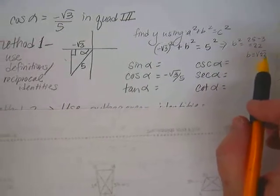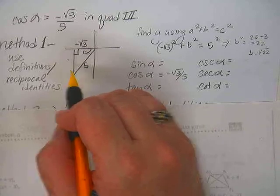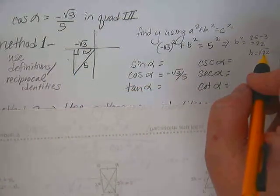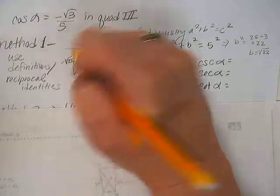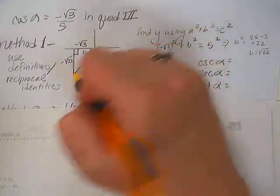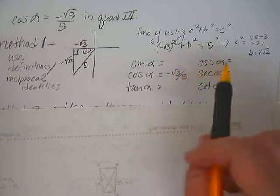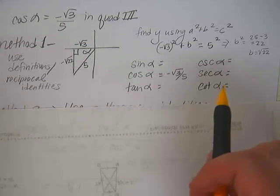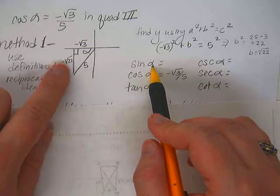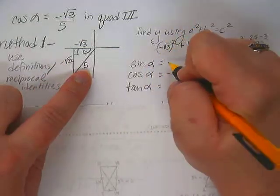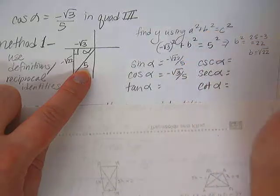Now be careful, even though that's the number we got from Pythagorean theorem, look at your graph and the quadrant it's in. Is it positive square root of 22 or negative square root of 22? That's a negative square root of 22 because it's going downward in that quadrant 3. So now we should be able to simply go in and fill in the other 5 ratios that they want us to find just using the definitions of those ratios. So sine is opposite over hypotenuse, so that would be negative square root of 22 over 5.